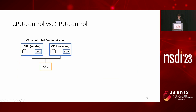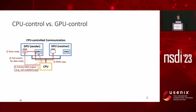In CPU-controlled communication, a CPU thread needs to poll an event to know that the data on GPU is ready for sending. Then the CPU will initiate the DMA engine on the sender GPU by calling CUDA memcopy, for example. This will trigger the DMA engine to copy the data to the receiver GPU. This design can minimize I/O overhead on GPU because it offloads every I/O operation to the hardware DMA engine. However, it suffers from a long latency from CPU intervention.